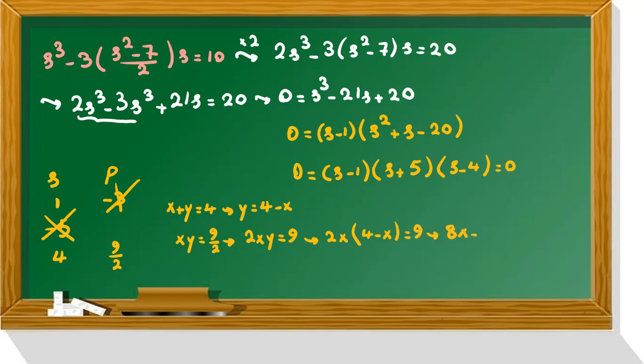And it will be 8x minus 2x squared equal to 9. Now if you take all things to the right-hand side, 0 equal to 2x squared minus 8x plus 9, equal to 0.